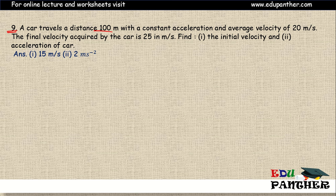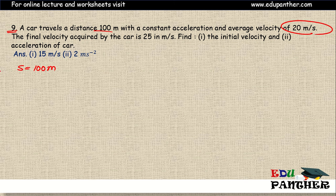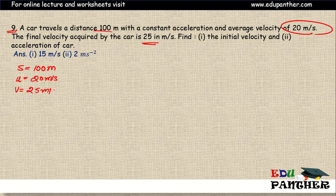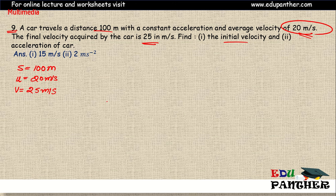Question nine: a car travels a distance of 100 meters. As I said earlier, first write down the given data. So distance s is 100 meters, with constant acceleration. The average velocity is 20 meters per second. The final velocity acquired by the car is 25 meters per second. We need to find the initial velocity and the acceleration of the car.